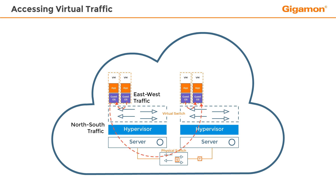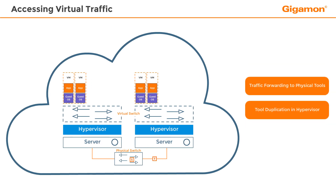which is the communication between two hosts across the virtual switch. There are two ways to monitor the traffic flowing in a virtual environment – forward to physical tools and duplicating the tool infrastructure in the hypervisor.